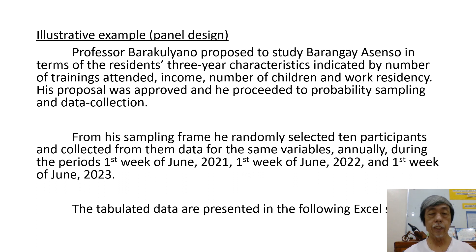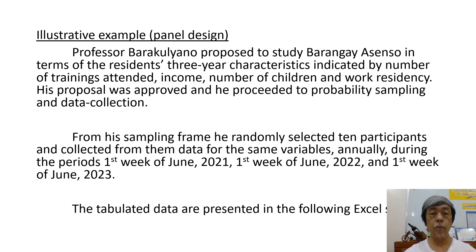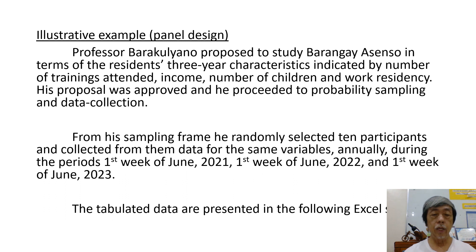For this kind of design, let us consider this example. Professor Barraculiano proposed to study Barangay Ascenso in terms of the residents' three-year characteristics indicated by number of trainings attended, income, number of children, and work residency. His proposal was approved and he proceeded to probability sampling and data collection. From his sampling frame, he randomly selected 10 participants and collected data for the same variables annually during the periods: 1st week of June 2021, 1st week of June 2022, and 1st week of June 2023.